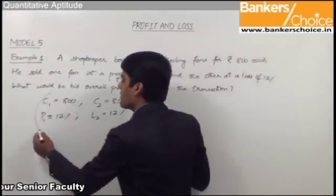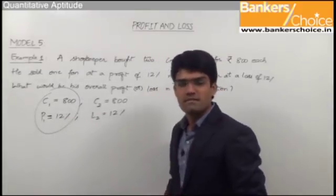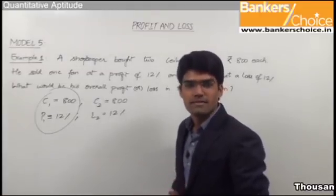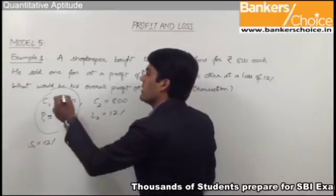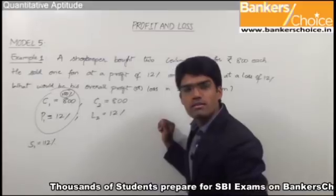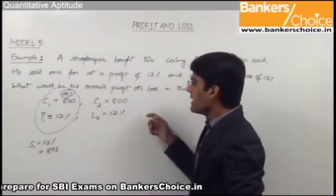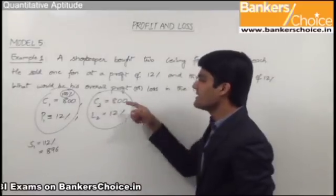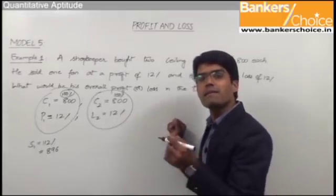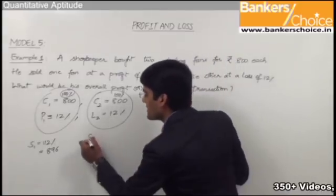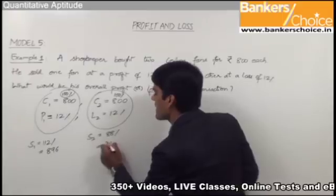As discussed in Model 1, when cost price and profit percentage are given we can find the selling price. If profit is 12%, selling price = 112% of CP. Since CP is Rs. 800, 100% = 800, so 112% = Rs. 896. Similarly for the second fan, CP = 800 and loss = 12%, so selling price = 88% of 800 = Rs. 704.